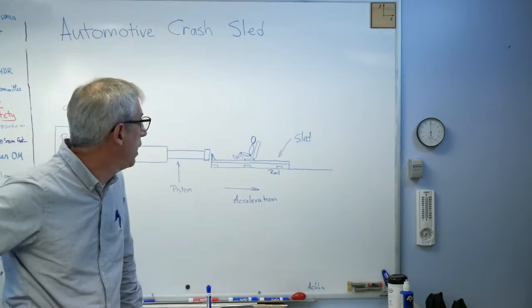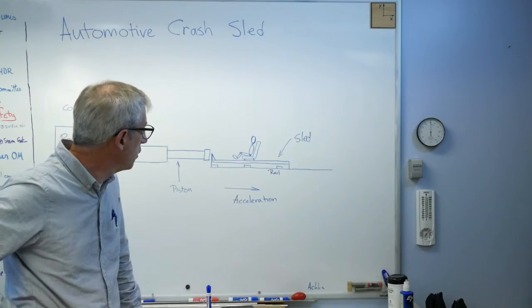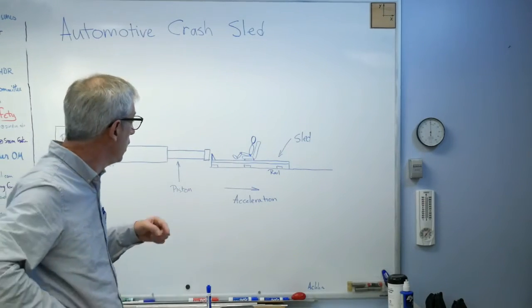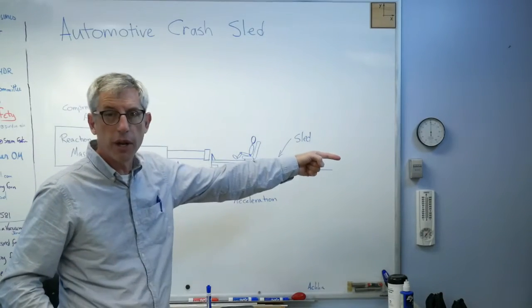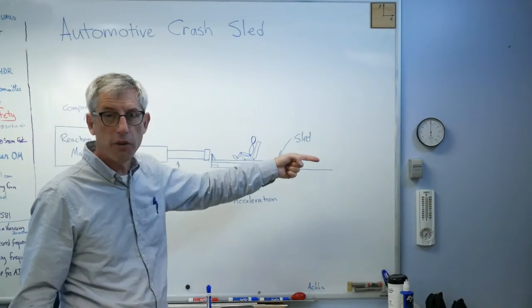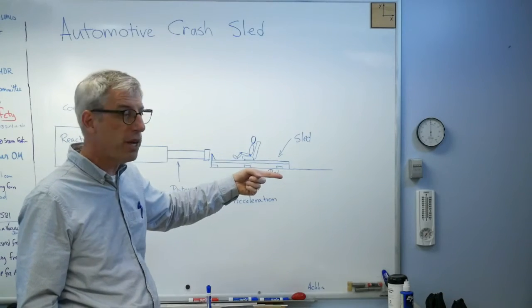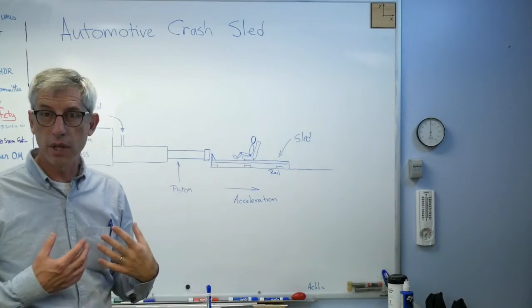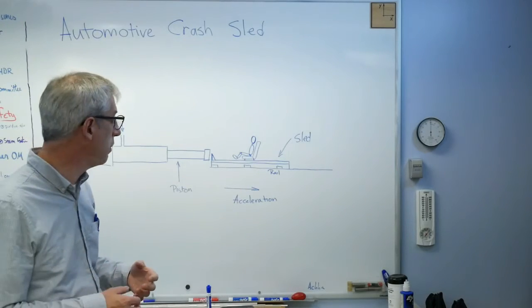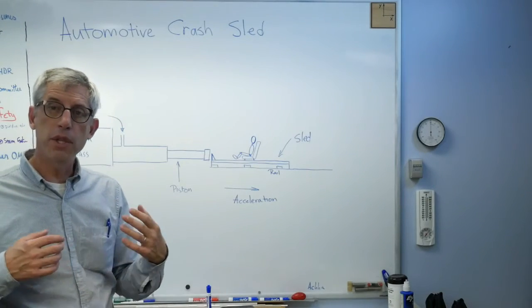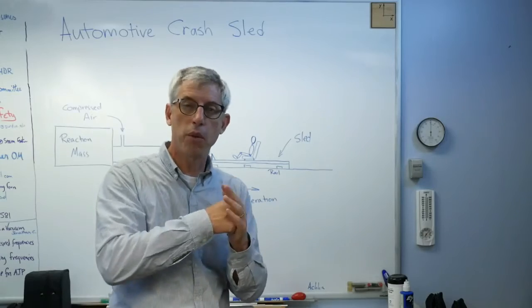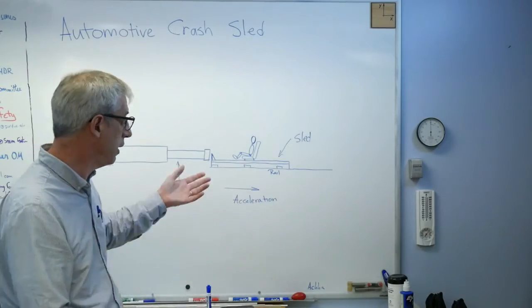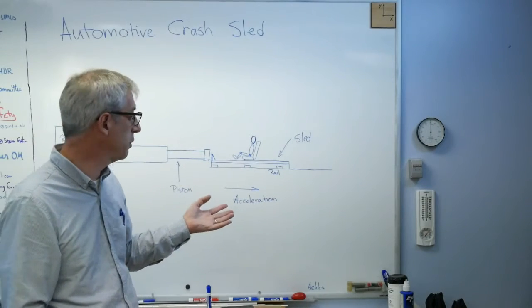On this one, I've got a seat and a crash test dummy sitting right there. When this thing fires that direction, the acceleration is that direction. Because the acceleration is that direction, the dummy is basically thrown forward into the seat belt, into the shoulder harness and the lap belt. What happens if you put a dummy in a car and slam it into the wall? The dummy's thrown forward into the seat belt. It obviously works this way.